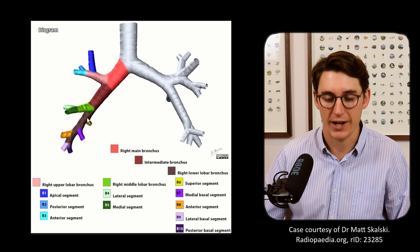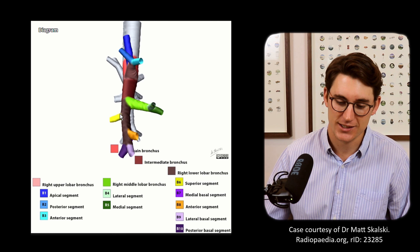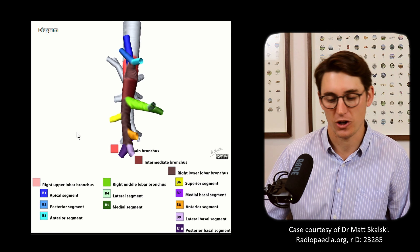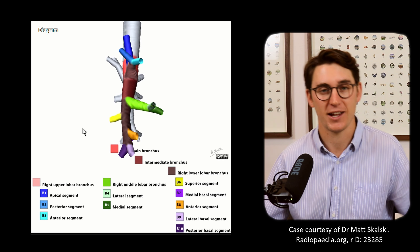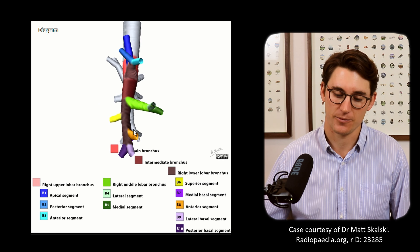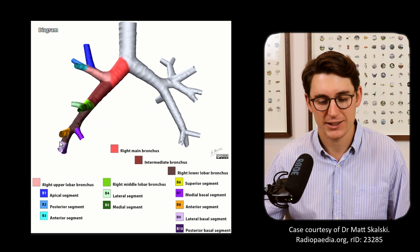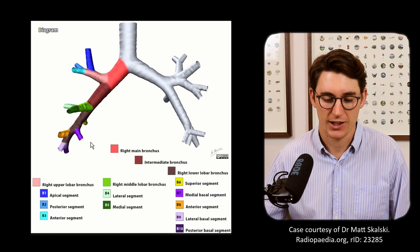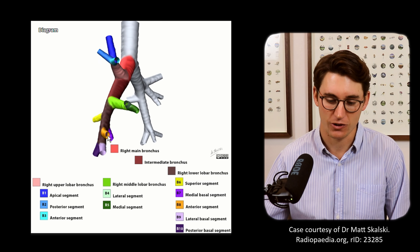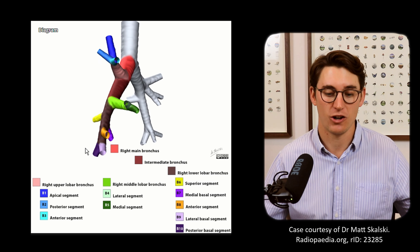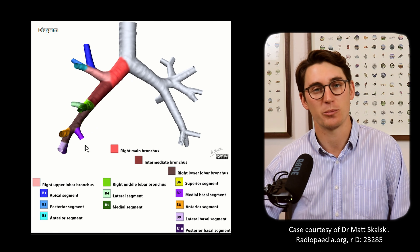Going down into our right lower lobe bronchus, the first branch to come off on both sides is the superior branch. This superior segment doesn't oppose the diaphragm — it sits above the diaphragm and heads out to the posterior section of the lung. Then the basal branches of the right lower lobe bronchus are our medial, anterior, lateral, and posterior branches. The posterior portion of the lung extends most inferiorly, so the posterior branch is the last to come off.